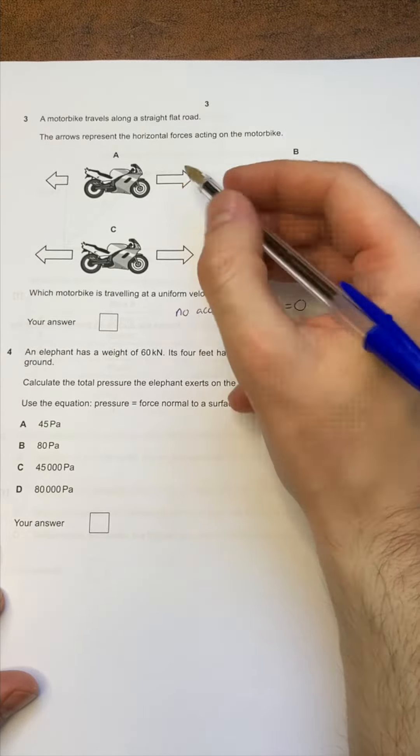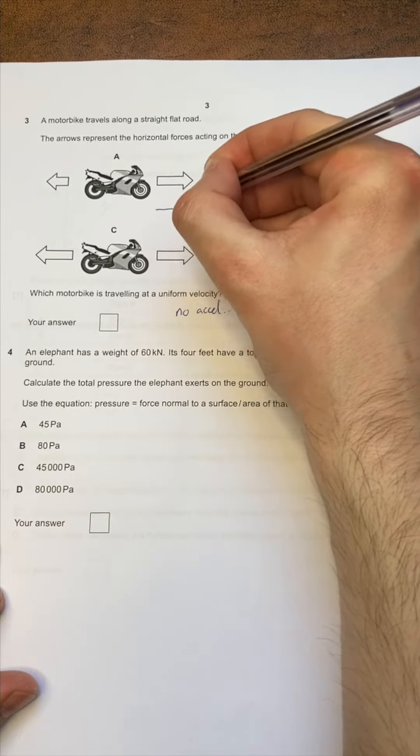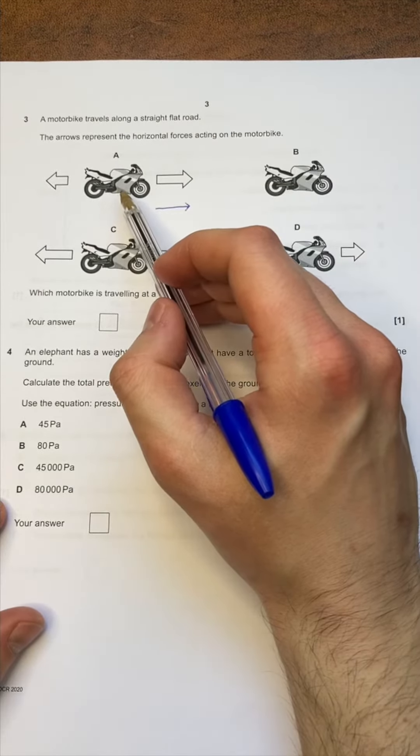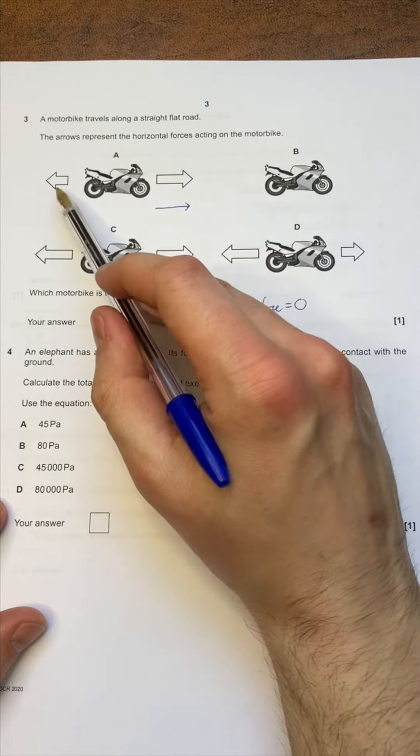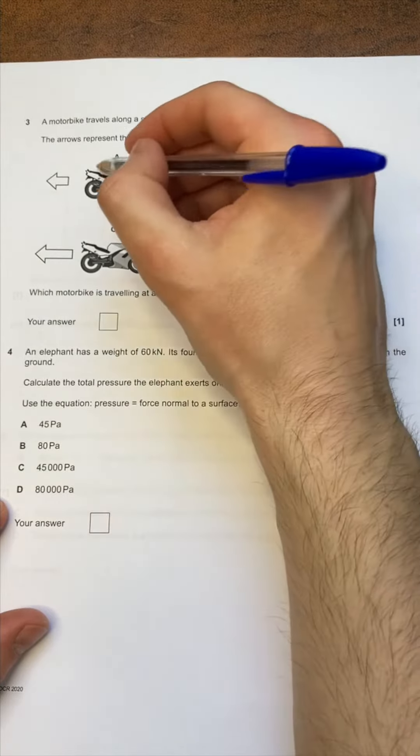Ignoring the fact that our vectors aren't drawn how vectors should be drawn, it should be an arrow like this anyway. Our motorbike in image A has a larger vector here than there, so there is a non-zero net force here, so it can't be A.